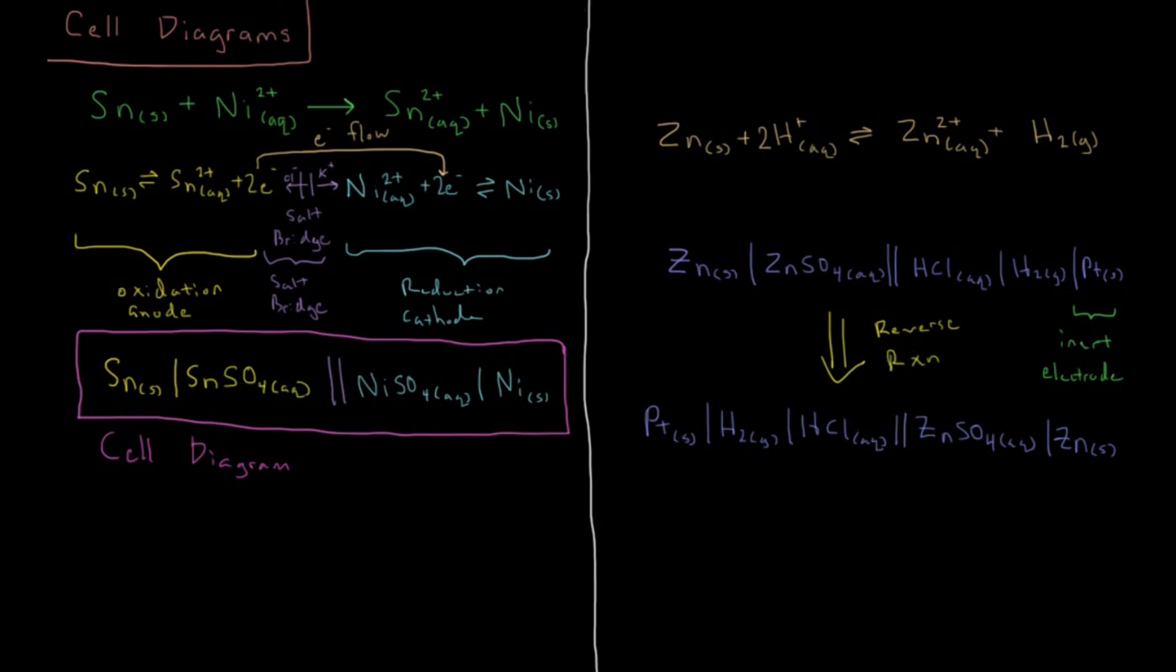So this would be the reverse reaction going from here to here. So that inert electrode, as we see, is always going to be on the outside, and is just an extra bar separated from the rest of our cell diagram, wherever that occurs.